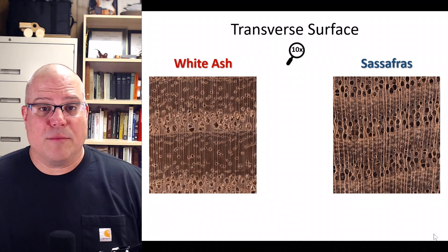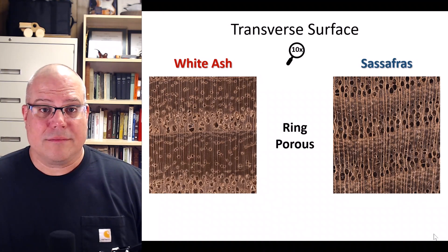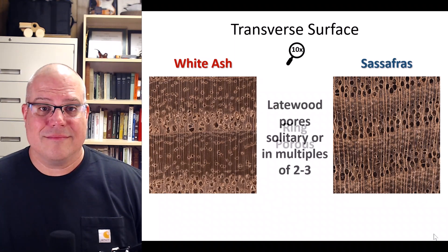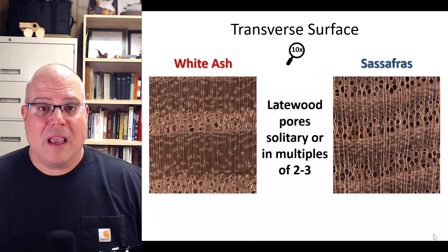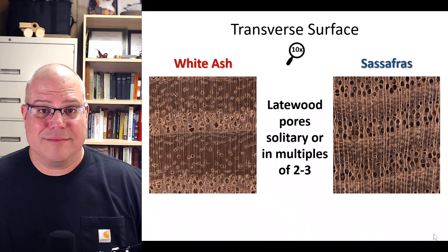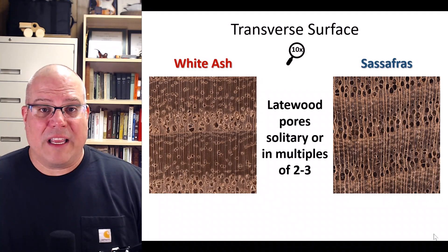Finally, let's look at some transverse features. Both woods are ring porous, and in both woods the late wood pores are solitary or in multiples of twos and threes.